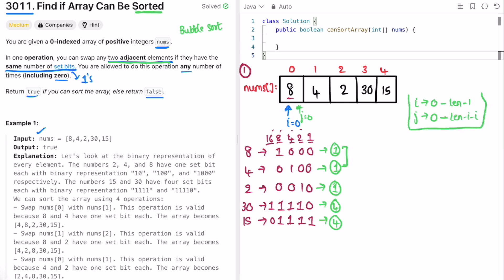This is going to be the bubble sort. We are going to use two for loops using O of n square time complexity. We have to add an additional check that if the set bits of those two elements pointing at i and j are same, only then we can swap.